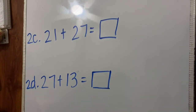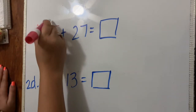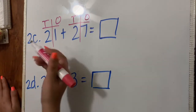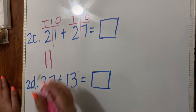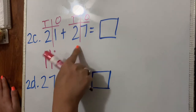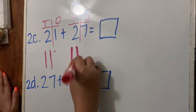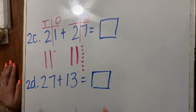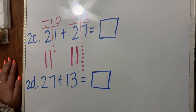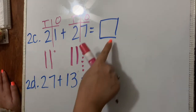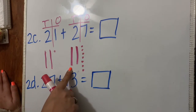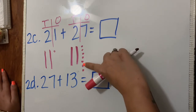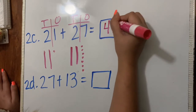For the last two problems I'll use the quick tens method. For 2c: 21 plus 27. I split into tens and ones. For 21 I draw two tens and one one. For 27 I draw two tens and seven ones. I can't bundle my ones because seven plus one is only eight — I need ten to make a bundle. Counting everything: 10, 20, 30, 40, 41, 42, 43, 44, 45, 46, 47, 48. The answer is 48.